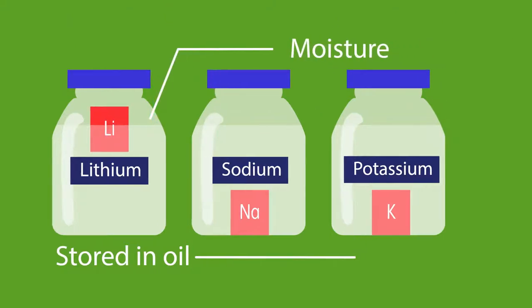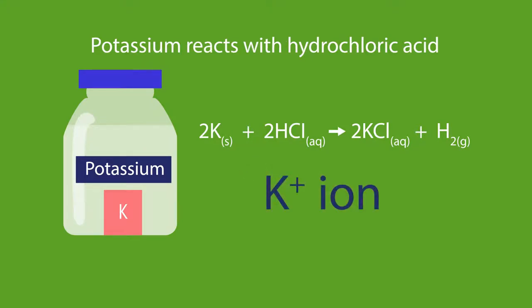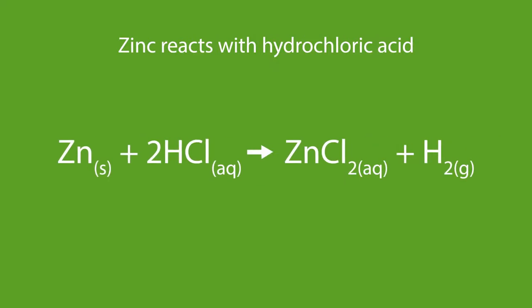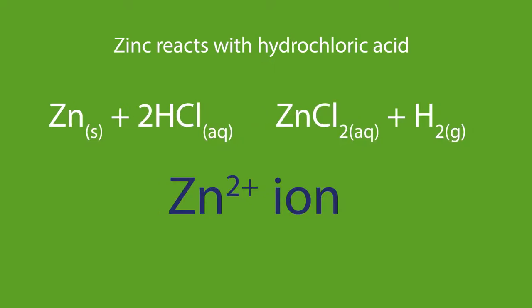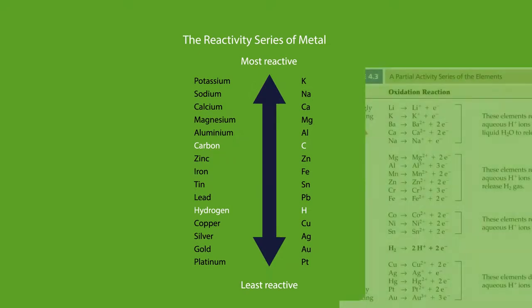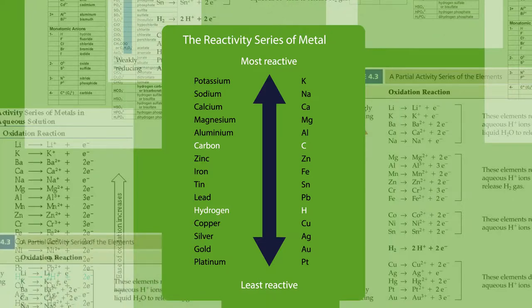When potassium reacts with hydrochloric acid, potassium readily loses an electron to form the K positive ion, whereas when zinc reacts, Zn will form its ion Zn2+ but less readily than potassium does. So the series of reactivity is also a list which shows the tendency for metals to produce their positive ions.